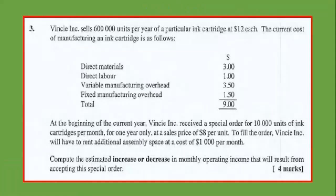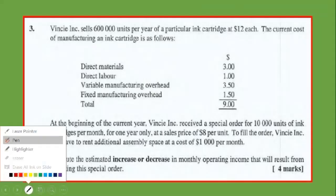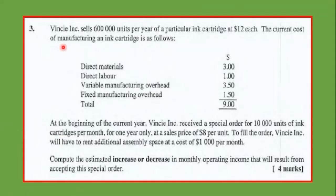We have here the problem. Vince sells 600 units per year of a particular ink cartridge at $12 each. The current cost of manufacturing the ink cartridge includes variable costs and a fixed cost per unit, totaling $9.